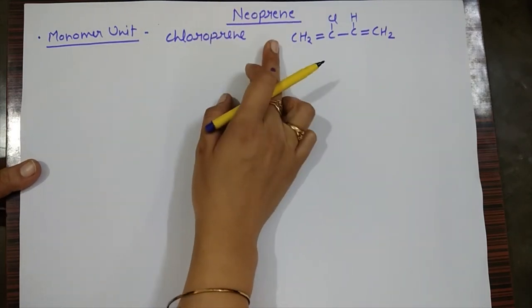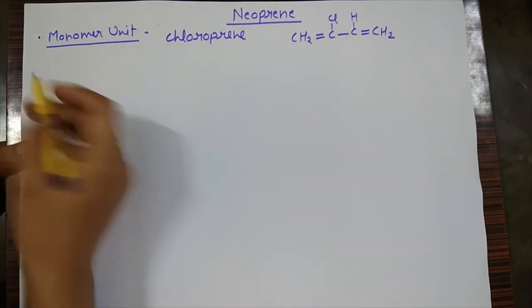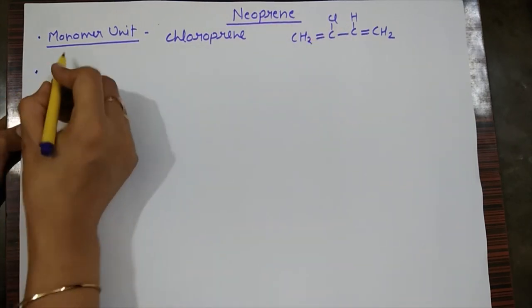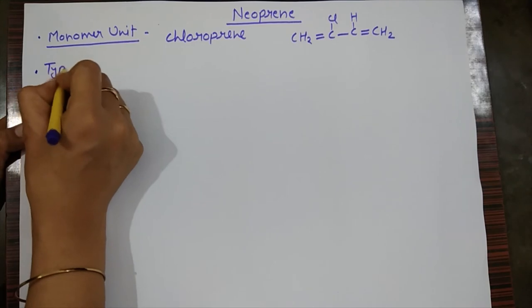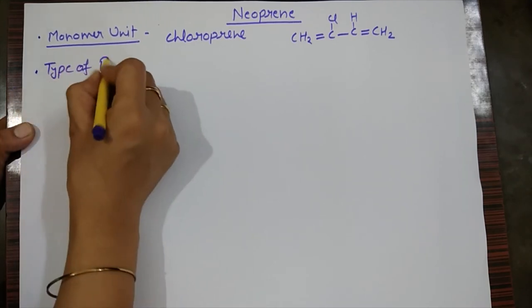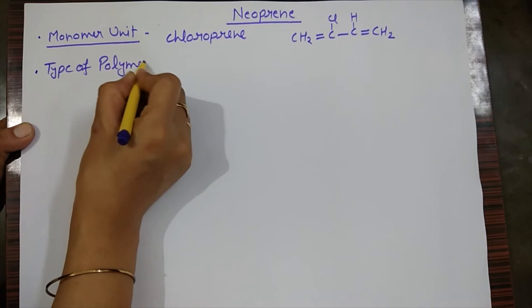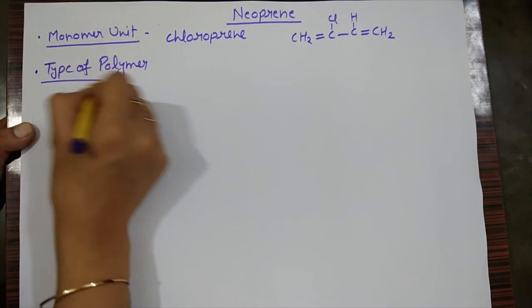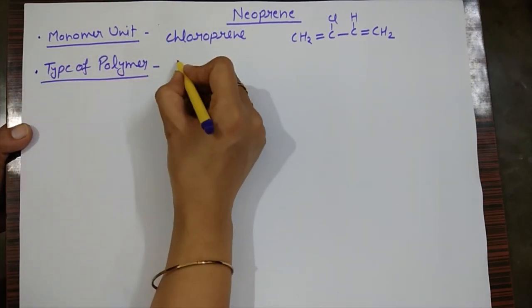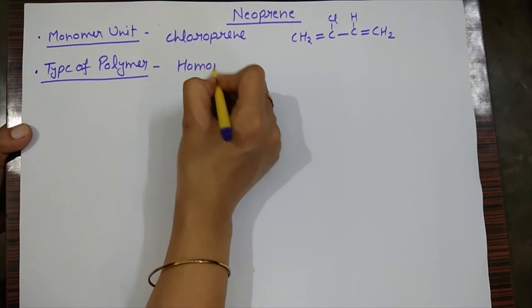Neoprene's alternate name is polychloroprene. Regarding the type of polymer, neoprene is made from one type of monomer, which is chloroprene. This makes it a homopolymer.